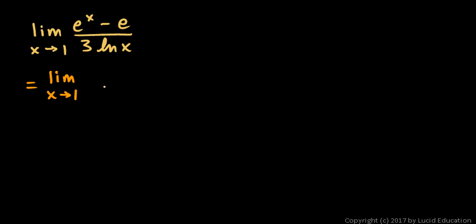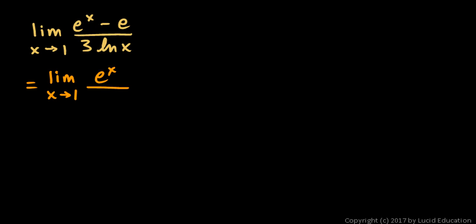We'll take the limit as x approaches 1 of the derivative of the numerator, and that is just e to the x. The derivative of e to the x is e to the x, but e by itself is a constant, and the derivative of a constant is 0. So the derivative of the numerator is e to the x.